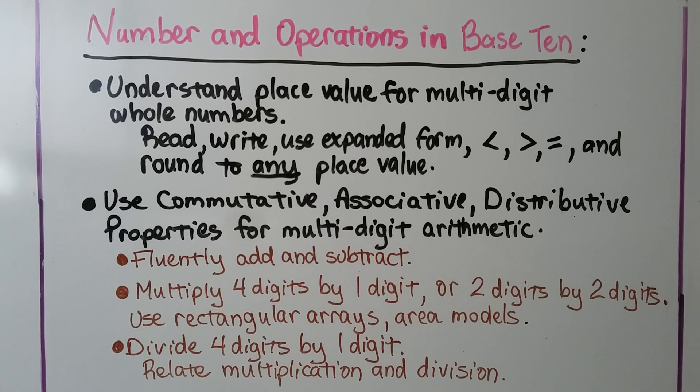Use commutative, associative, distributive properties for multi-digit arithmetic, fluently add and subtract with regrouping and all, multiply 4 digits by 1 digit or 2 digits by 2 digits, use rectangular arrays and area models.